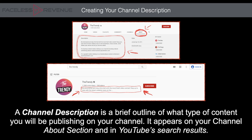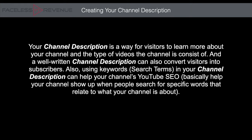When people search for terms or phrases that are in your description, the channel can also show up — that's how the algorithm works. For search terms, when people search for a specific keyword phrase, YouTube recommends videos or channels that have those keywords written in the description. A channel description is a brief outline of what type of content you'll be publishing. It appears on your channel's About section and in YouTube search results. A well-written description can also convert visitors into subscribers using keywords, also referred to as search terms, for YouTube SEO.